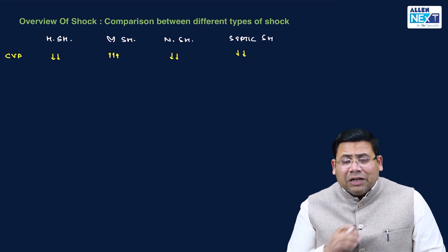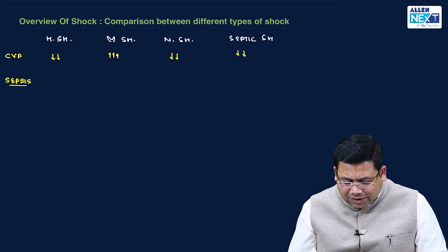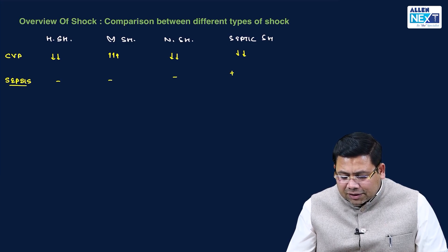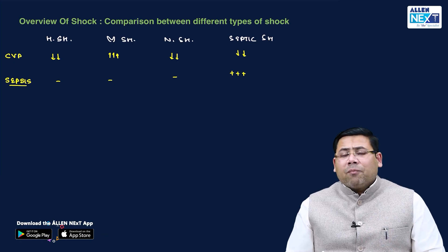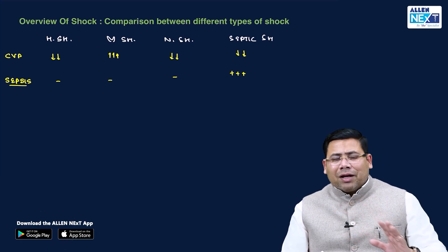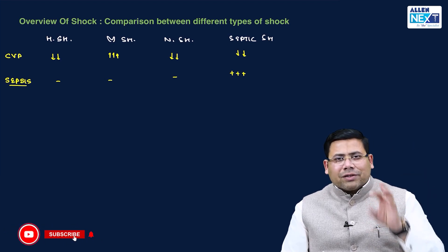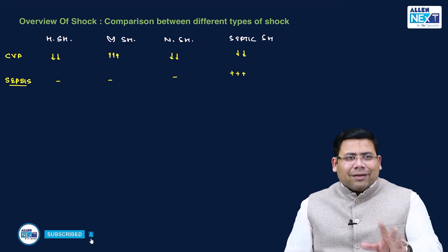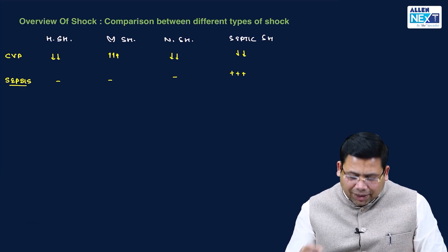Next, in which variety do you get to see sepsis? It is negative in hypovolemic, cardiogenic, and neurogenic shock, and it is strongly positive in septic shock. This has been asked in a lot of exams recently — it has been taught for the last five to six years and recently appeared in one of the exams.